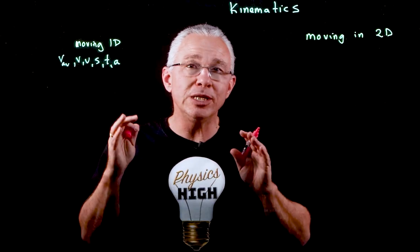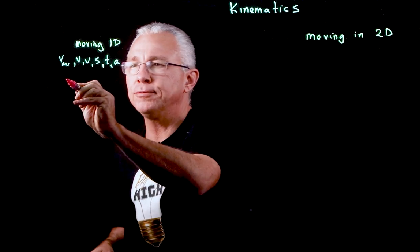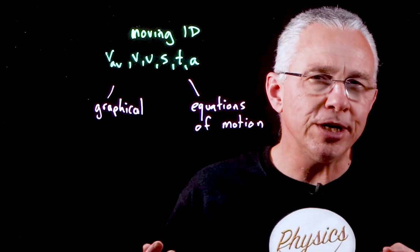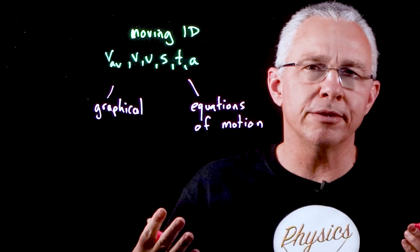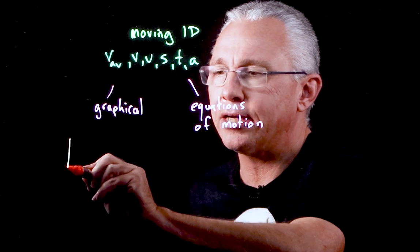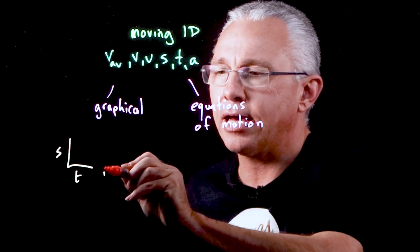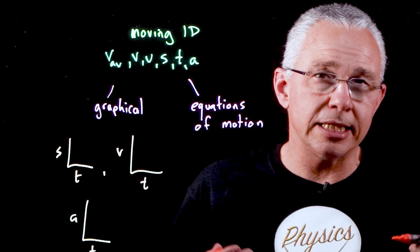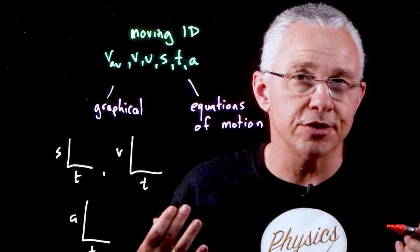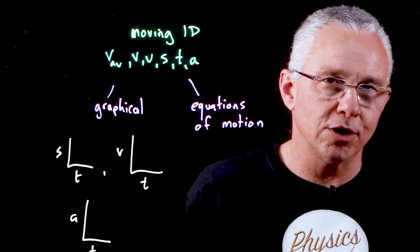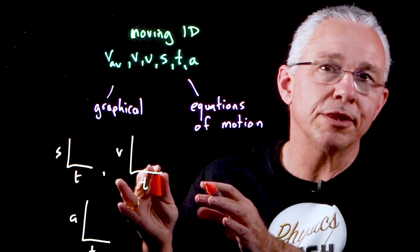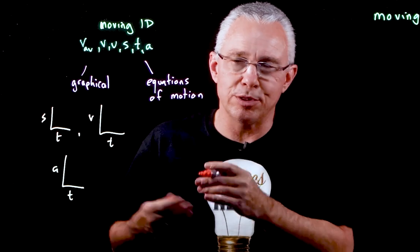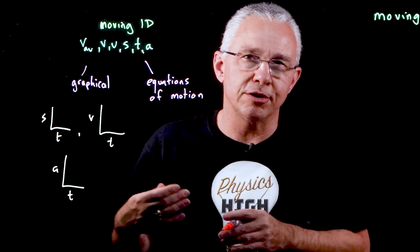When we examine these variables, we look at them in one of two ways: graphically, and using the equations of motion. In the graphical sense, we look at one or two of these key variables with respect to time. We're generally interested in displacement-time graphs and velocity-time graphs. Acceleration-time graphs do exist, but since we deal with constant acceleration, they end up as horizontal lines. You need to be familiar with what the graphs look like when an object is changing its velocity or displacement with respect to time.